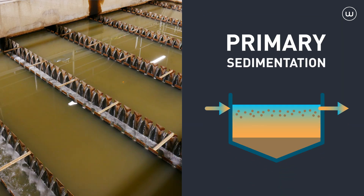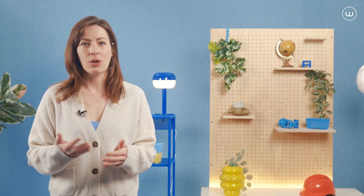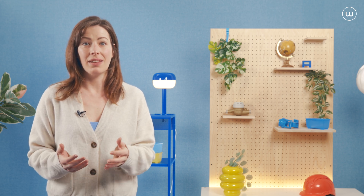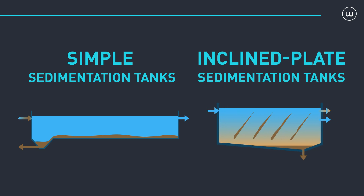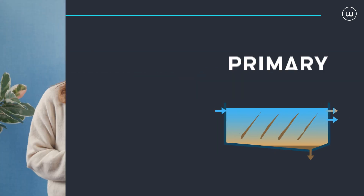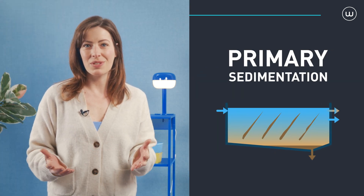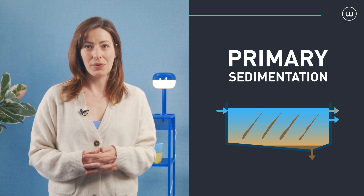The purpose of primary sedimentation, sometimes called primary treatment, is to remove readily settlable suspended solids that are not removed during preliminary treatment because they are too small. This sedimentation stage may be preceded by a coagulation flocculation stage, which is more common in urban wastewater treatment than in industrial water treatment. There are different types of sedimentation tanks, also called clarifiers: simple sedimentation tanks, and inclined plate or lamella sedimentation tanks. Note that primary sedimentation is not always used — it depends on the rest of the treatment process.